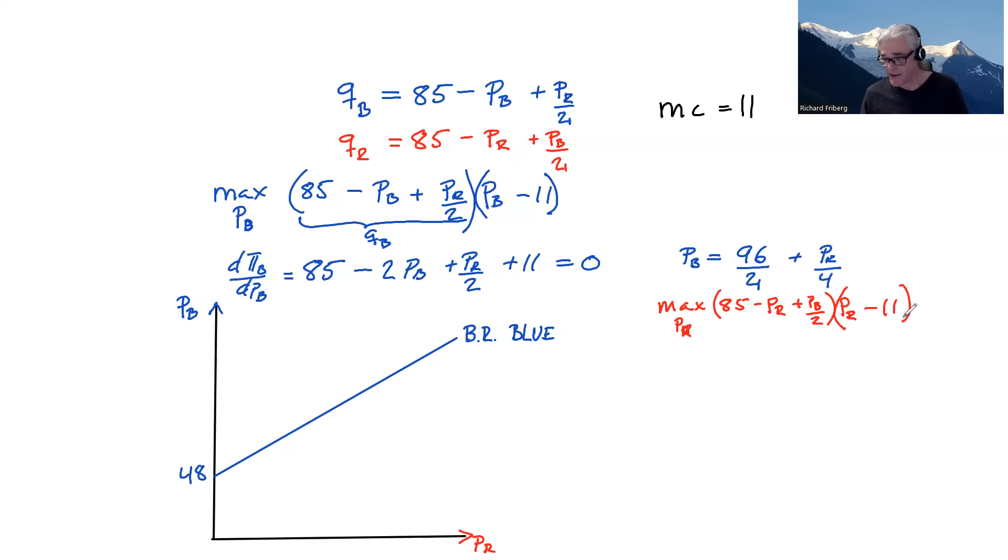So it's exactly symmetric here. So let's fast forward a bit and note that if it's symmetric, its best response function will be given by PR equals 48 plus PB over four. We want to illustrate that as well. So just as in the case of Cournot, we want to draw it in this diagram, but we have PR on the left-hand side. We want to have PB on the left-hand side.